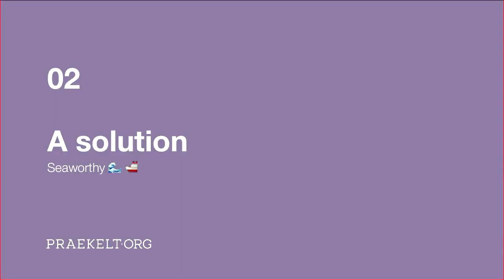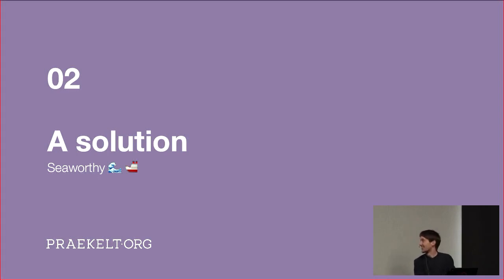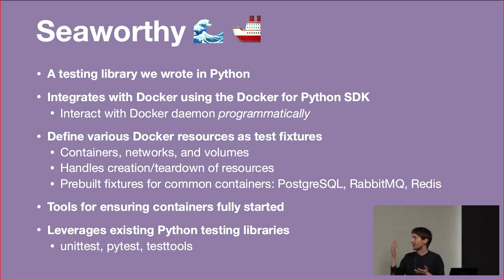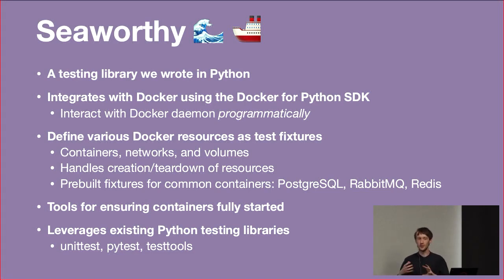So I'm going to propose a solution — it's not the only one — and it's a library we wrote called Seaworthy. The idea is containers on a ship, and you have to judge them for seaworthiness. It's a library written in Python, and it integrates with Docker via the Docker Daemon API using the official Docker API client. It allows you to interact with the Docker Daemon programmatically, which is quite rare. Most other tools interact using the command line interface, or like Docker Compose where you write a YAML file — but that doesn't have any API for programmatically interacting with Docker itself.